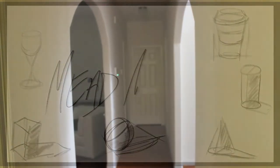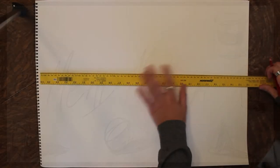The first thing you're going to do with any perspective drawing, for example drawing that hallway, is draw out your horizon line.